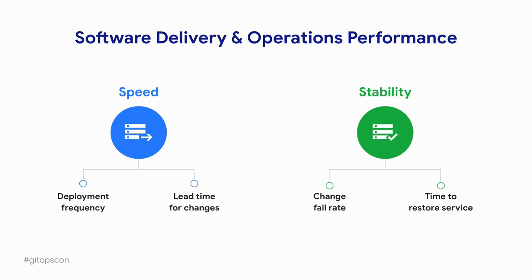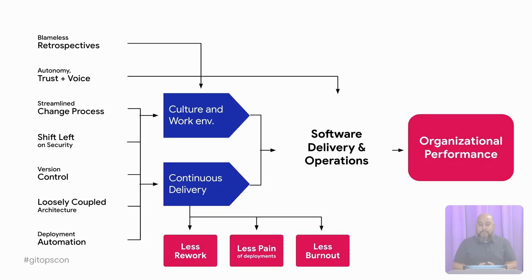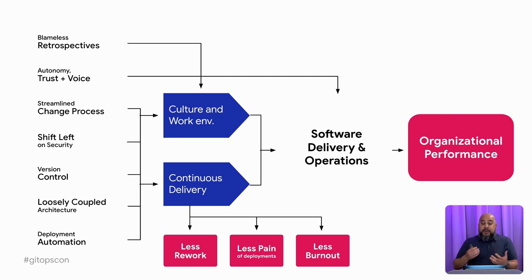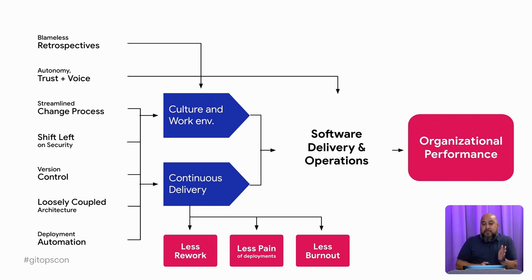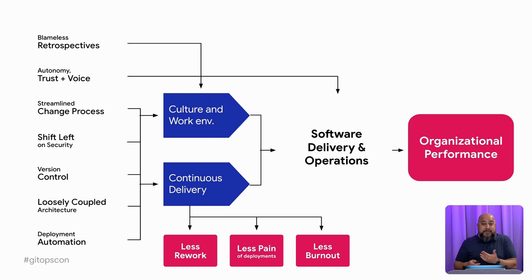We don't have time to go through all of the analysis from DORA, but we know there are specific leading indicators that drive software delivery performance and have a positive impact. The capabilities listed on the left all contribute to improvements in either culture or continuous delivery, and those two have the most positive impact on software delivery performance. They also have the most positive impact on the stuff that drags teams down — the toil of rework and deployment pain, which ultimately leads to burnout.